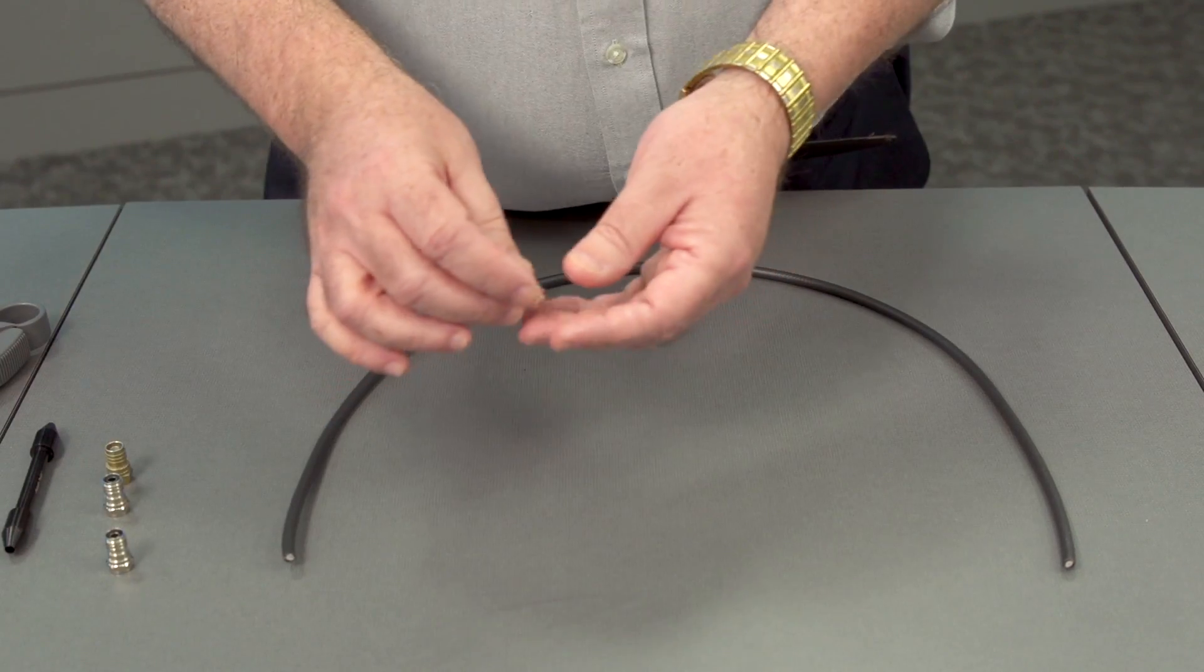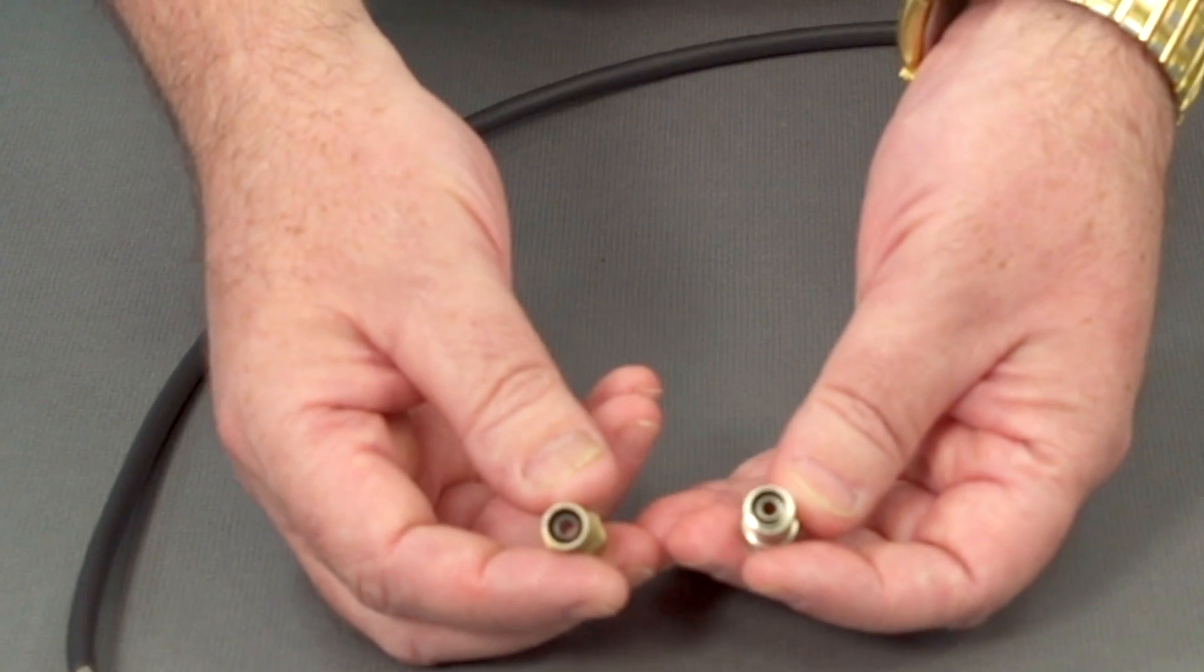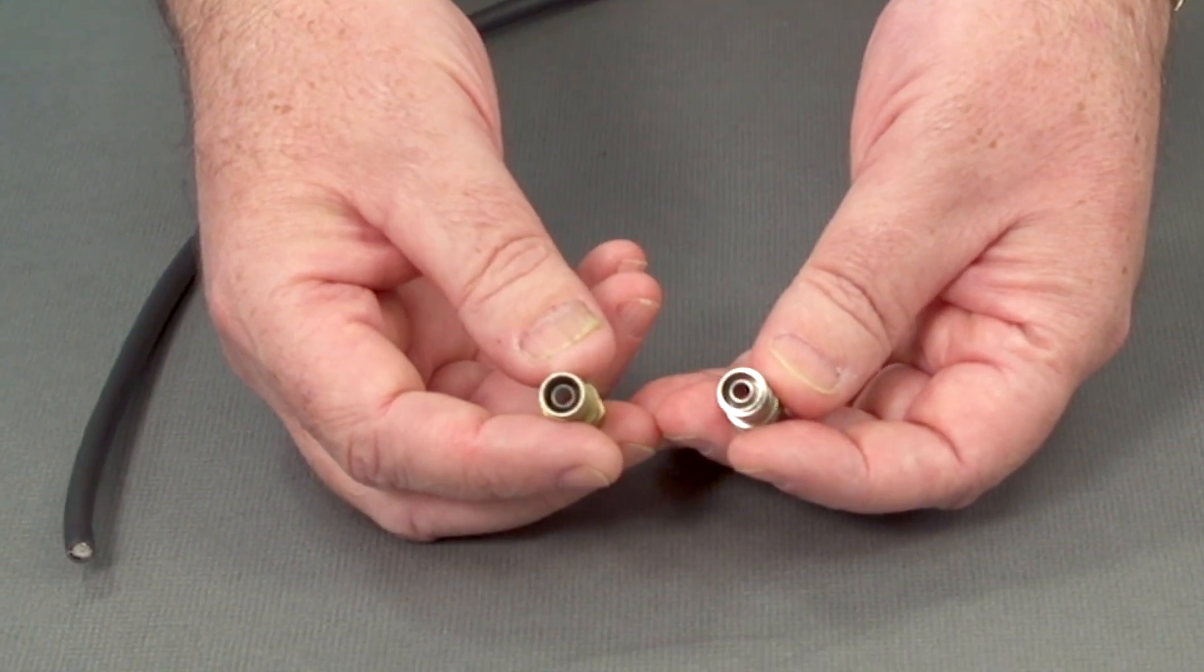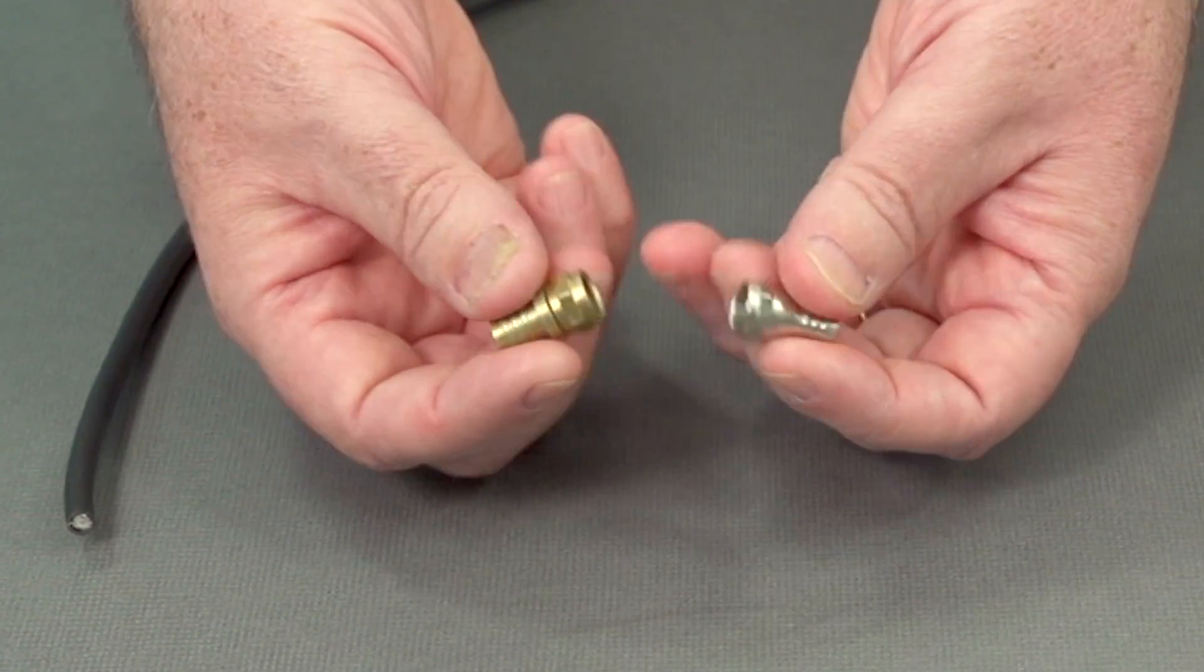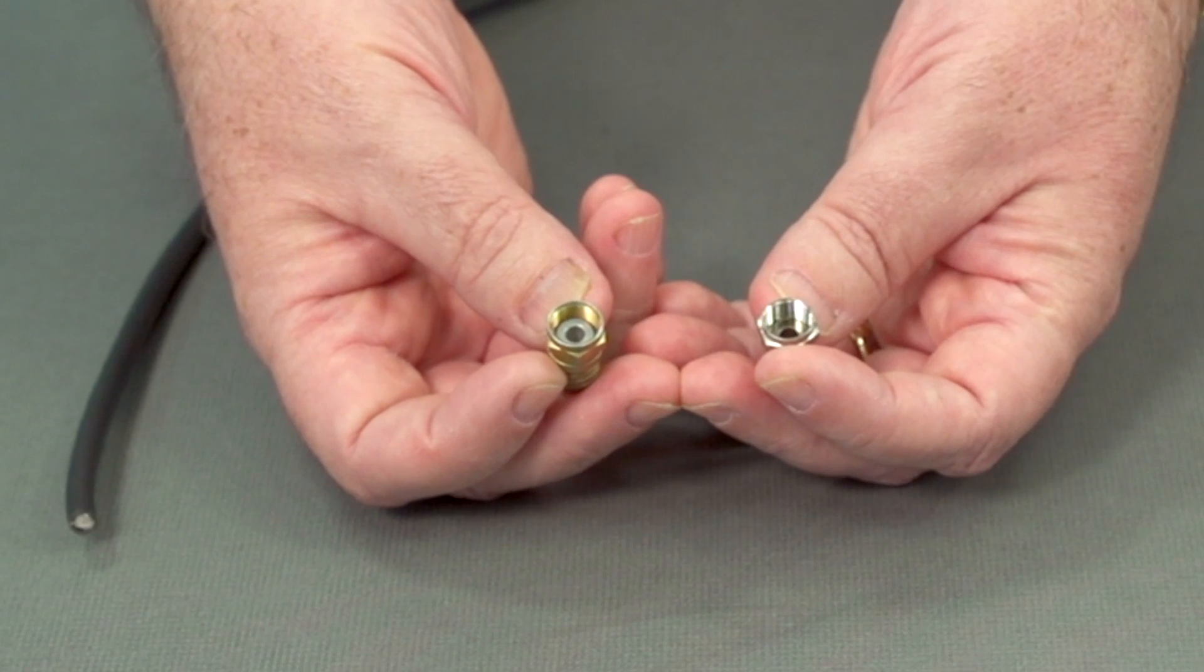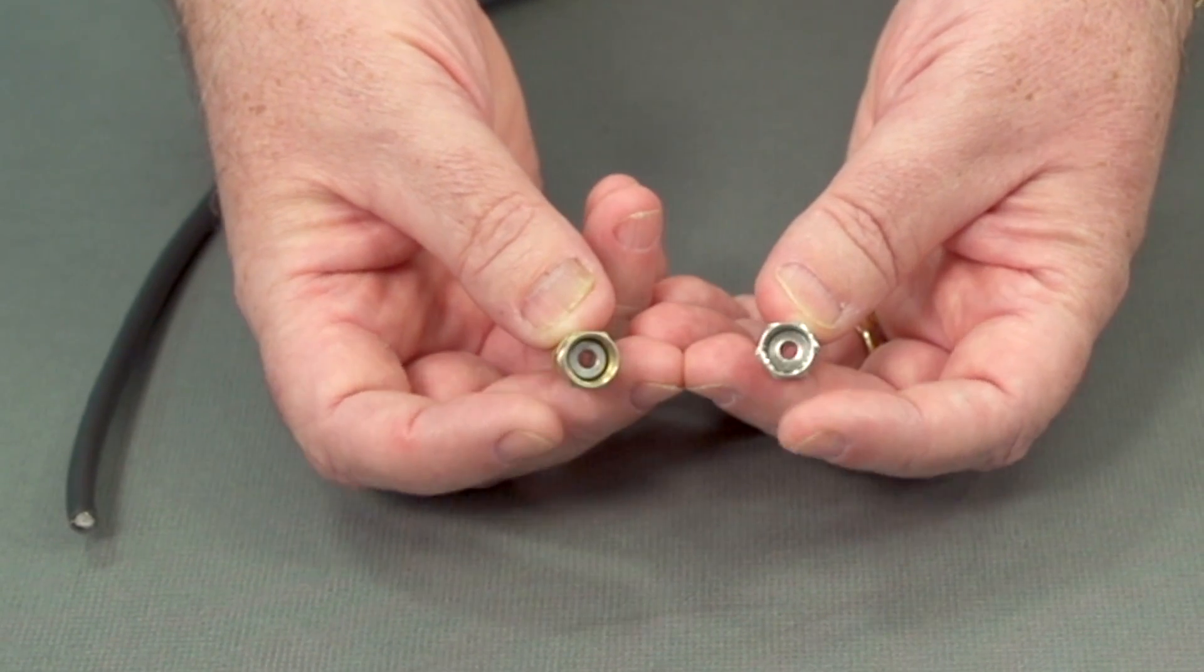Let's take a look at the connector first. You can see that there's a hole in the middle. That's where the dielectric and the center conductor will fit through and poke out the other side.